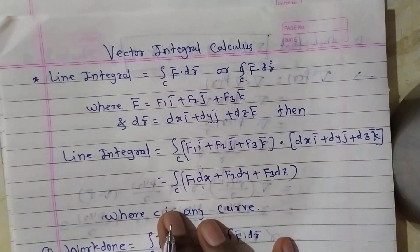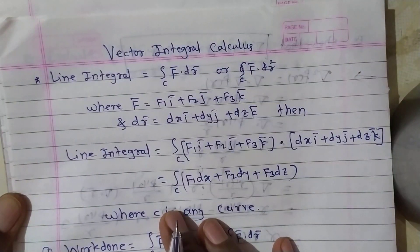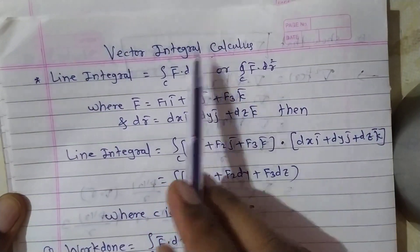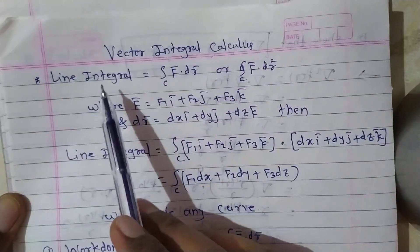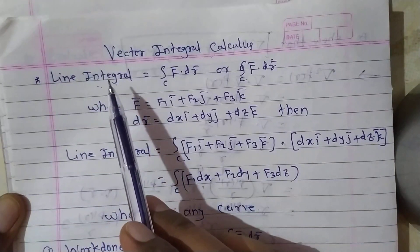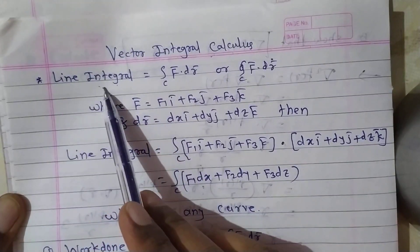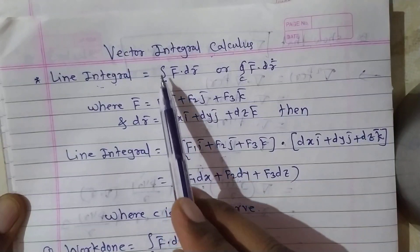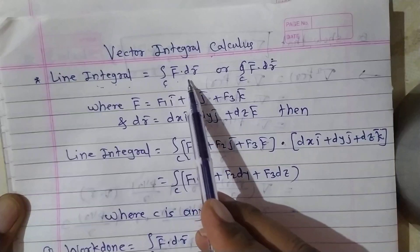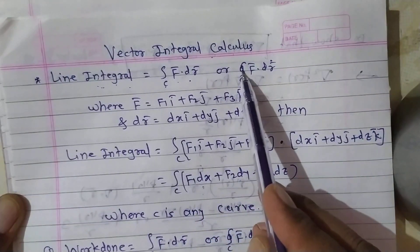Hello friends, welcome to SSP Math. Today we are going to start vector integral calculus. In vector integral calculus, the first topic is line integral. Line integral means single integral, surface integral means double integral, and volume integral is triple integration. In vector form, the line integral is equal to the integral over c of f̄·dr̄.